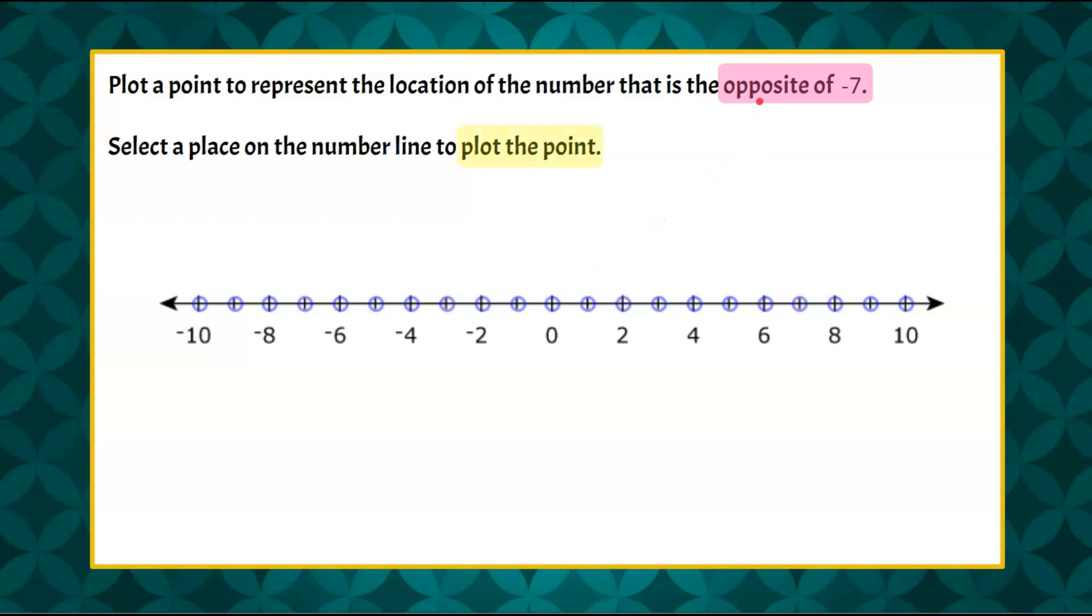So when we're talking about opposites, the first thing we're going to do is identify 0 on our number line because opposites lie equidistant from 0 on opposite sides of 0 on the number line.